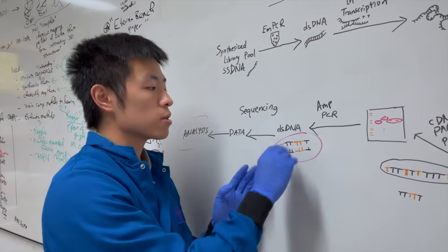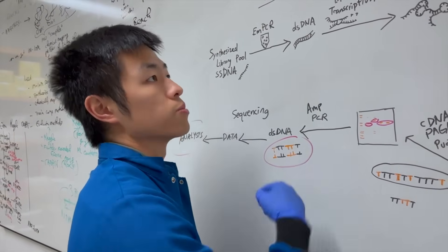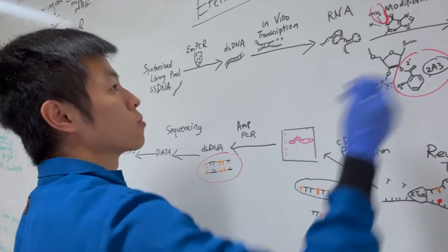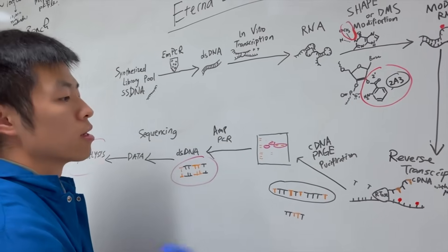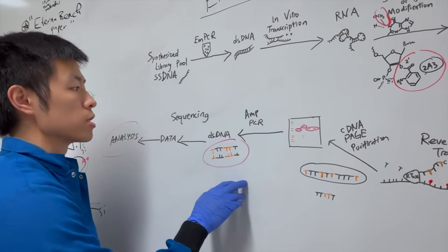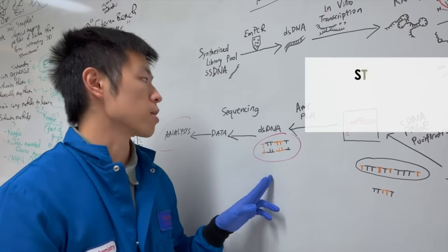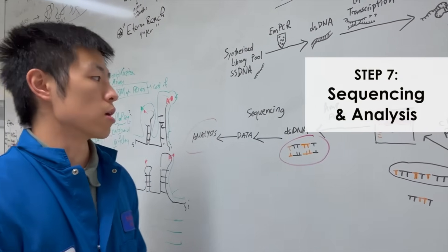Again, this double-stranded DNA has captured all the RNA structure information from the chemical modification in the form of mutated bases. So, we're going to use this double-stranded DNA for sequencing analysis.